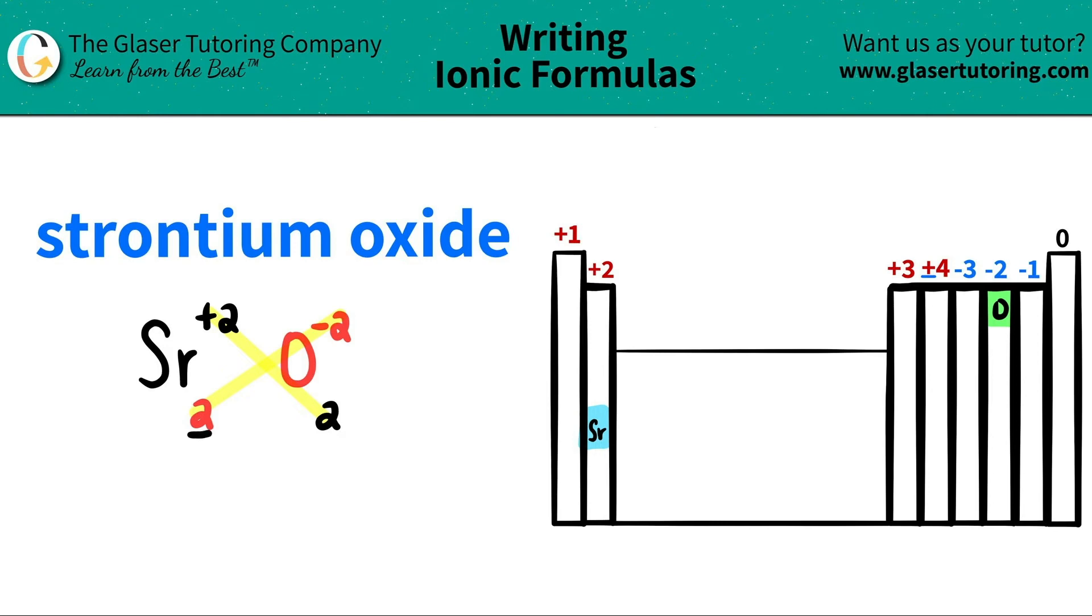So the thing I'm going to do is I can divide both of these by 2, and I could get a lower ratio. 2 divided by 2 for both is 1. And that's the number that I'm going to use in my compound.